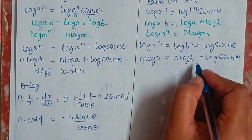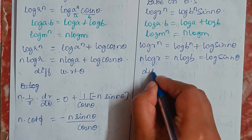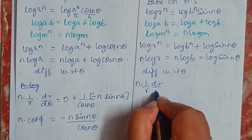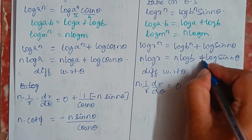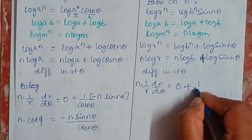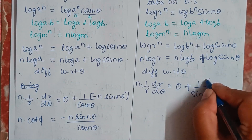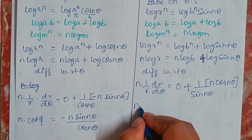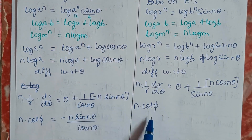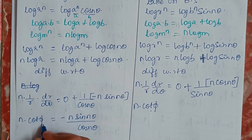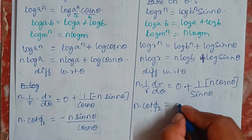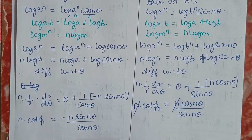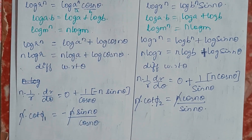Similarly, differentiating the second curve with respect to θ: n·(1/r)·(dr/dθ) equals 0 plus (1/sin(nθ))·n·cos(nθ). The n's cancel, giving cot φ₁ equals −tan(nθ) and cot φ₂ equals cot(nθ).